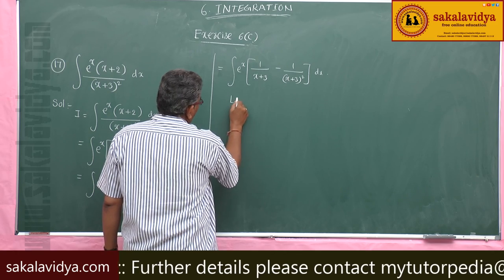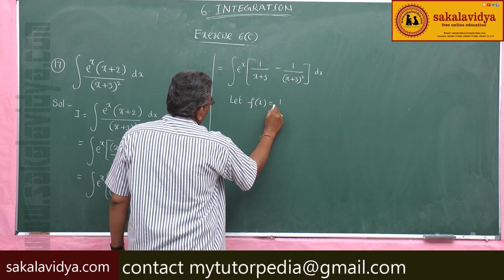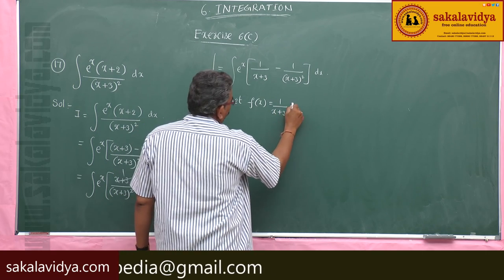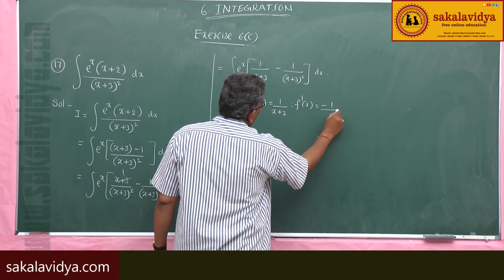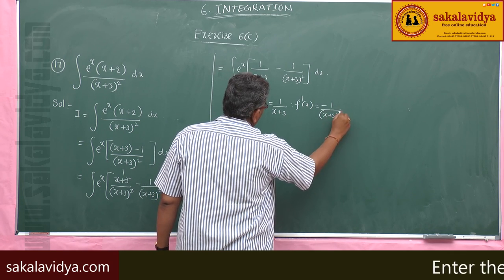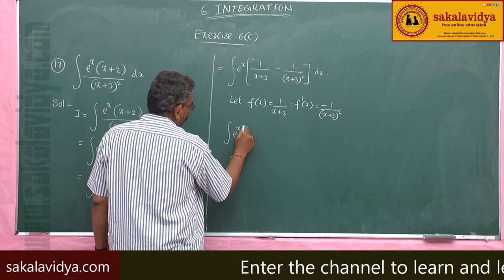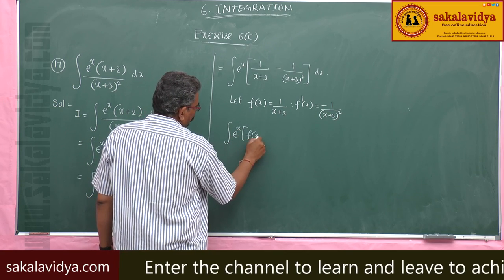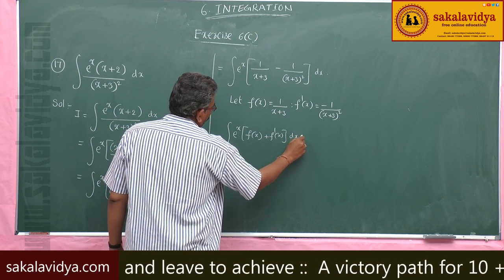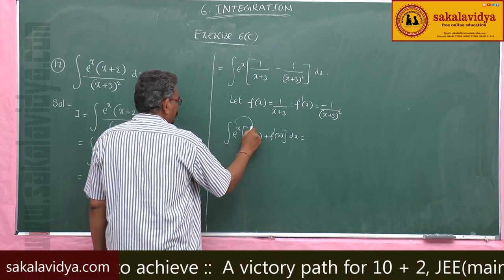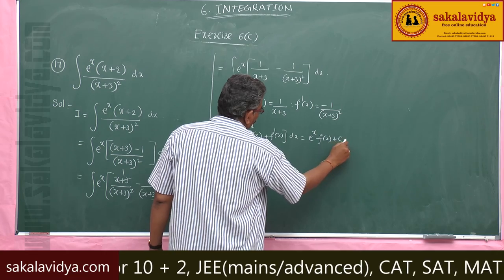So let f(x) = 1/(x+3), then f'(x) = −1/(x+3)². The integral becomes the integral of e^x times [f(x) + f'(x)] dx, which by the standard formula equals e^x · f(x) plus a constant of integration.